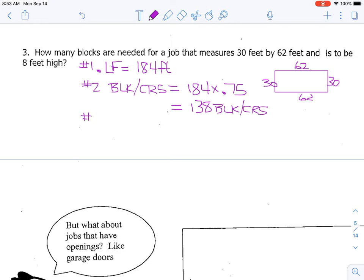Our next step or third step is to find out how many courses we need to make it eight feet high. So how you do that is you take your eight feet and then we've got to multiply it by 12 to turn it into inches, 96 inches. Once you've turned it into inches, you're going to divide by eight. Does anybody know why we're dividing by eight? You divide by eight because each standard block is roughly eight inches tall.